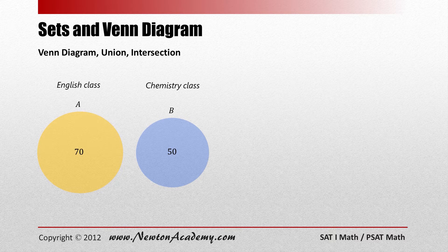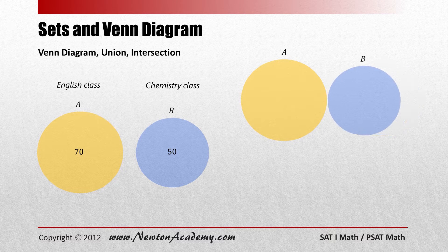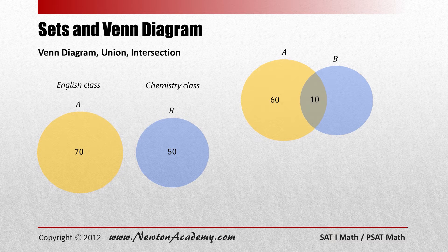On top of that, let's assume that there are 10 students who are taking both the English class and chemistry class. We can depict this with two overlapping circles — set A and set B — where the overlapped area represents students taking both classes. So we have 10 in the overlap, 60 students taking English only, and 40 students taking chemistry only.